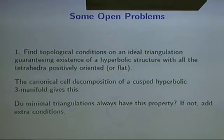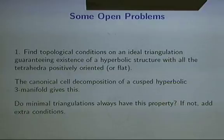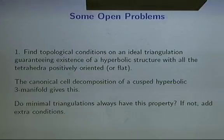One condition you might try to add: what if you take a triangulation with the smallest possible number of tetrahedra — a so-called minimal triangulation? You'd hope that by reducing the number of tetrahedra, the geometry should get better, and with fewer tetrahedra there's more hope of getting positively oriented tetrahedra. But it's not clear that minimal triangulations will always work here — there may be examples where the minimal triangulation is not necessarily positively oriented. In that case, we need to come up with extra conditions.